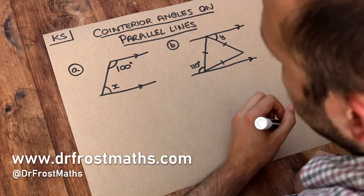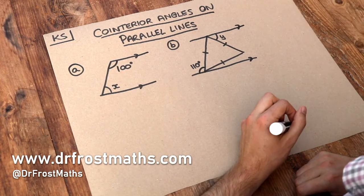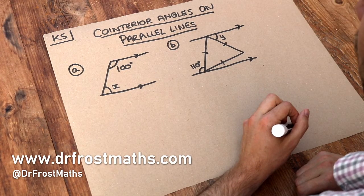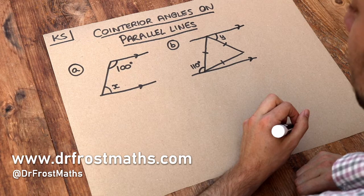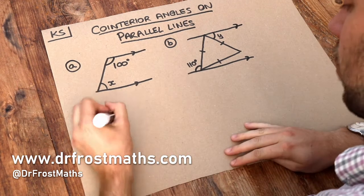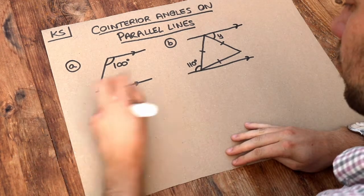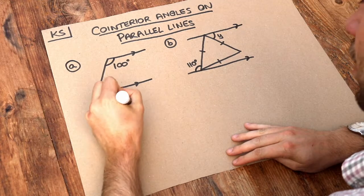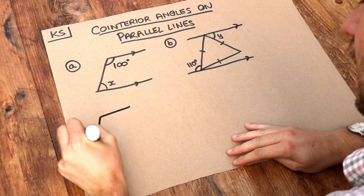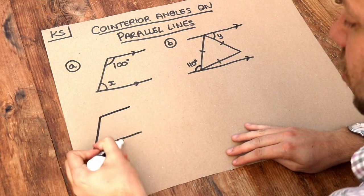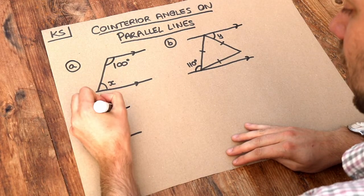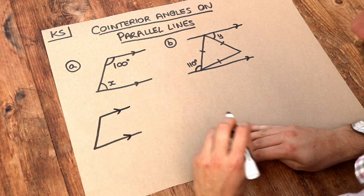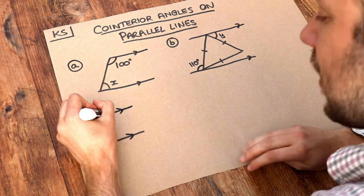Hello and welcome to this Dr. Ross Mass key skill video on co-interior angles on parallel lines. We have co-interior angles when we have this kind of C shape, where the two lines at either end are parallel to each other.